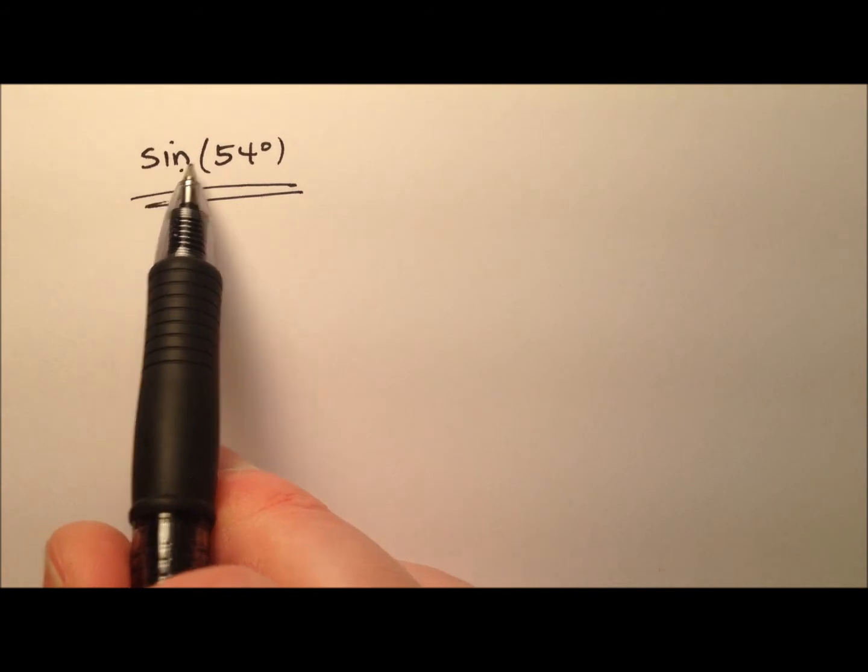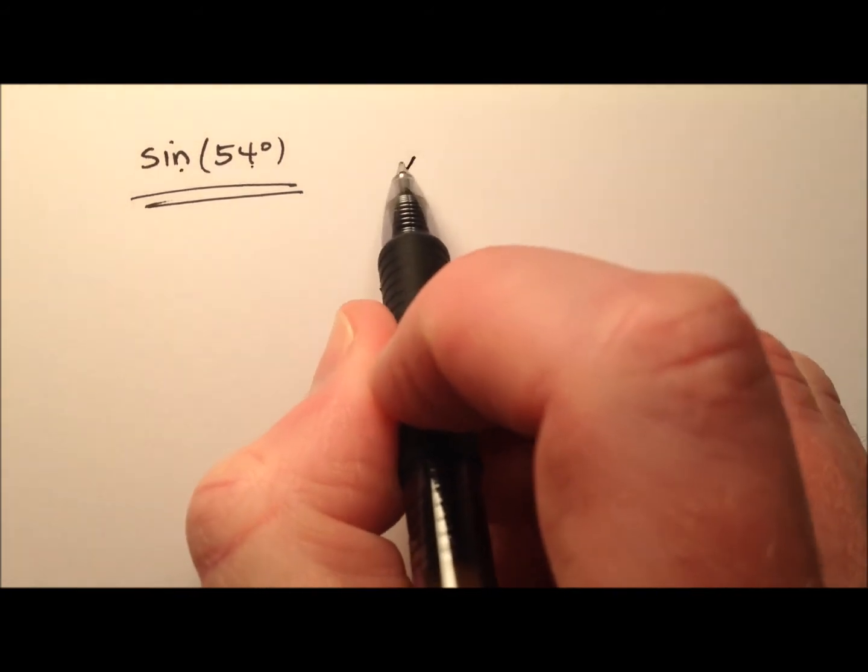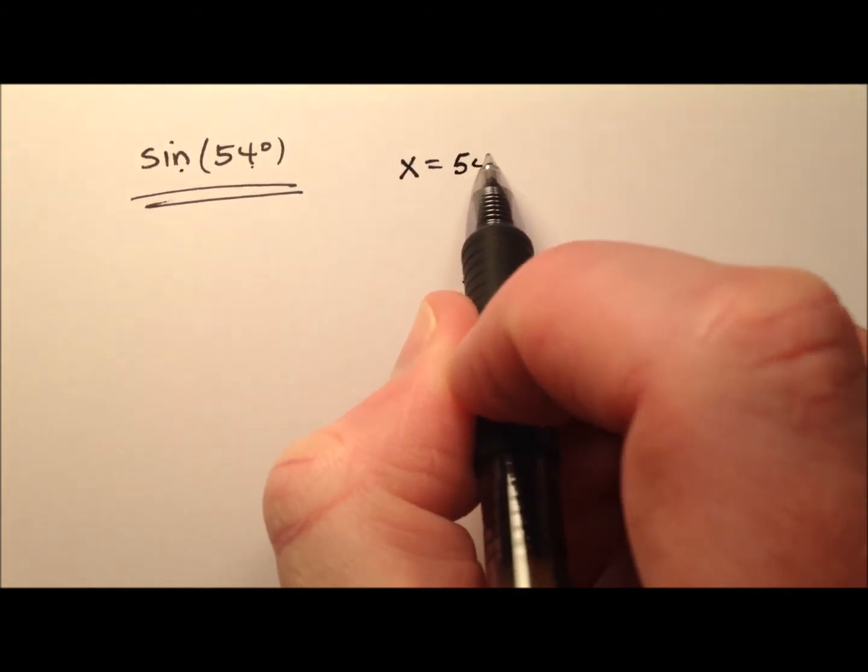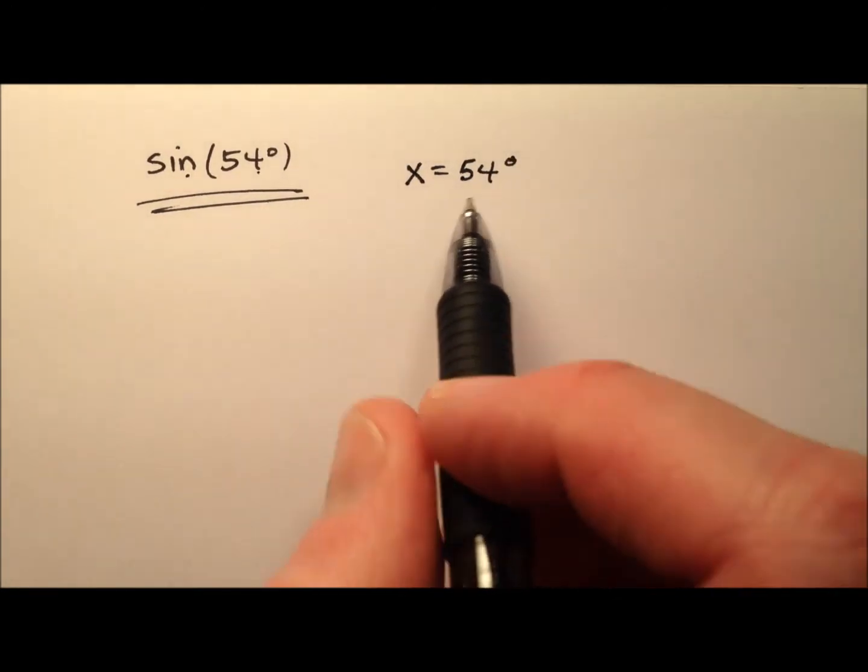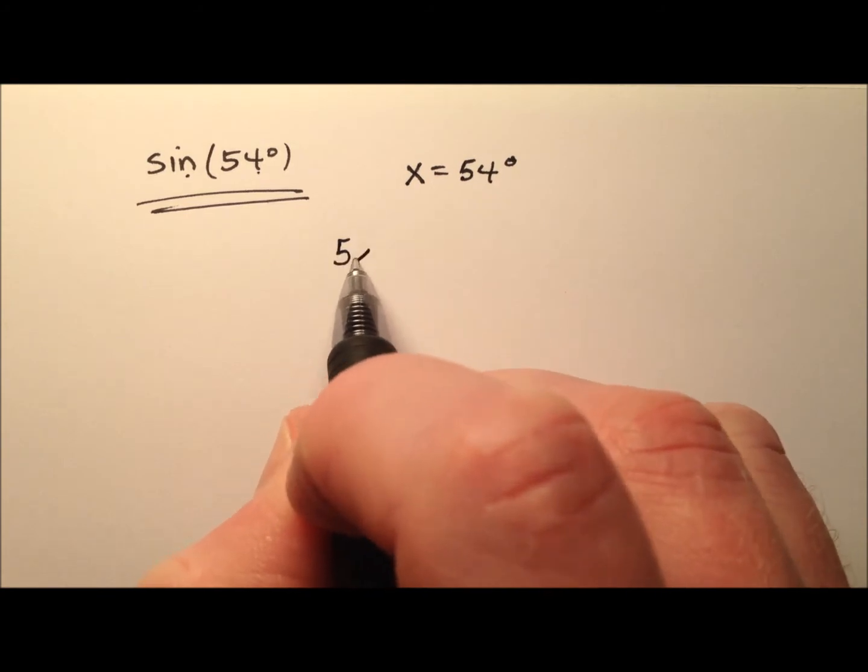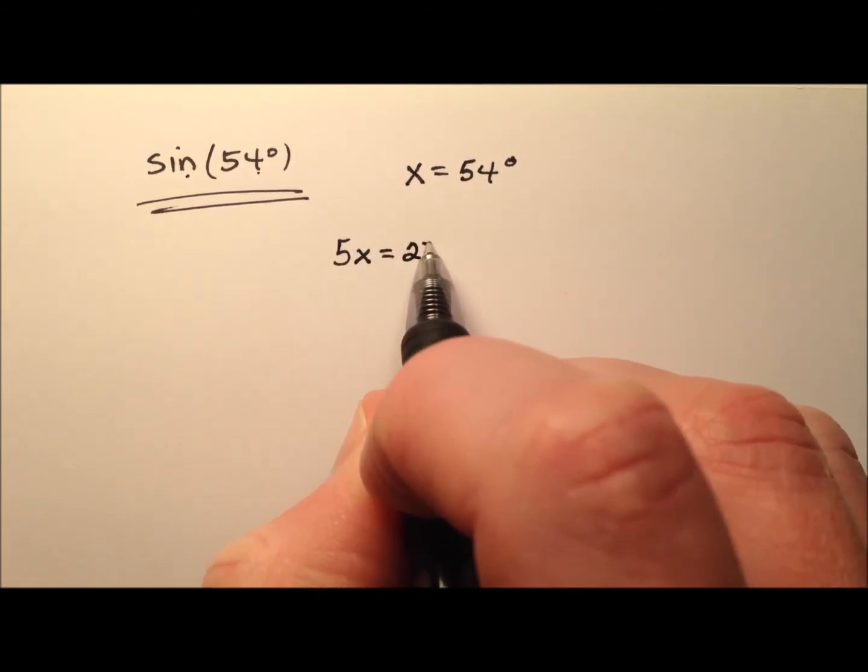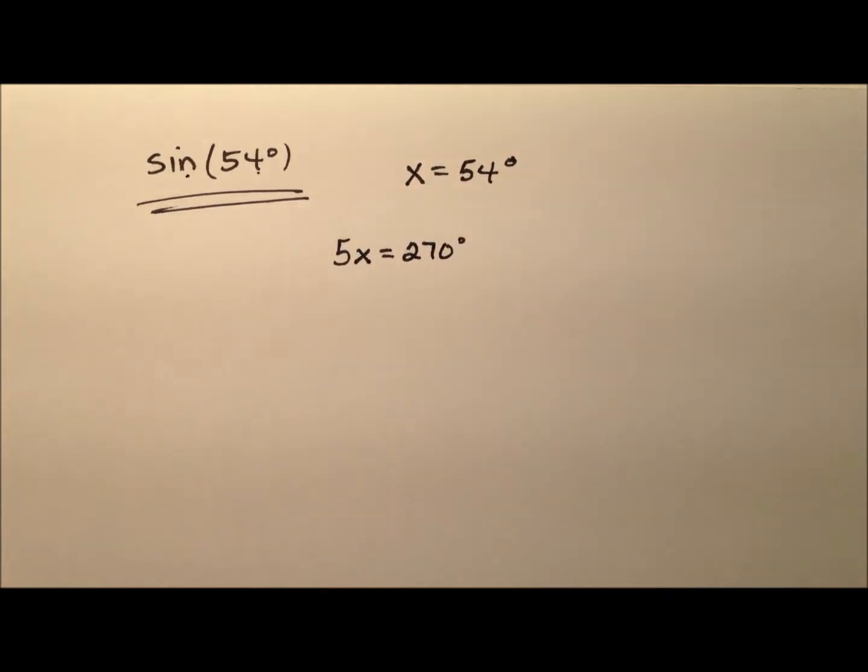So we're looking for the sine of 54 degrees. I'm going to start by saying x equals 54 degrees. Well if x is 54 degrees, then I can say 5 times x is the same as 5 times 54, which is 270 degrees.